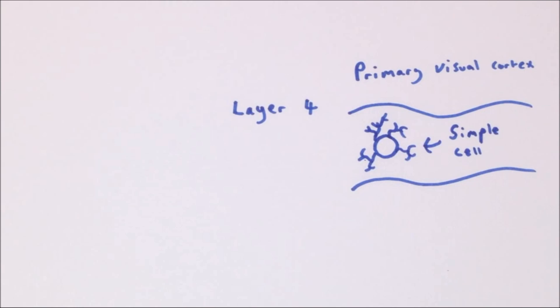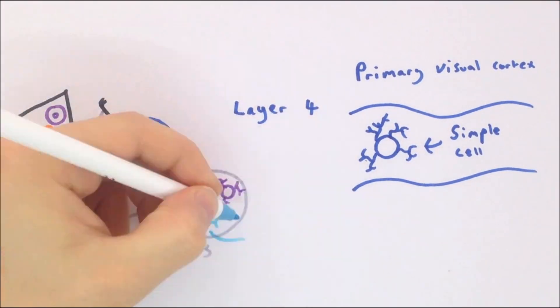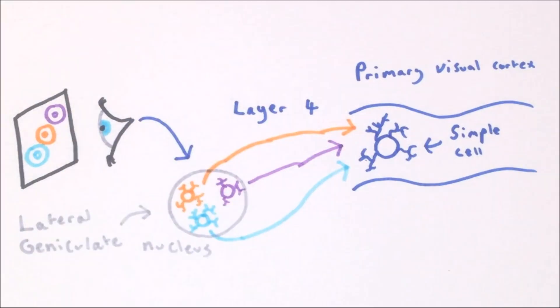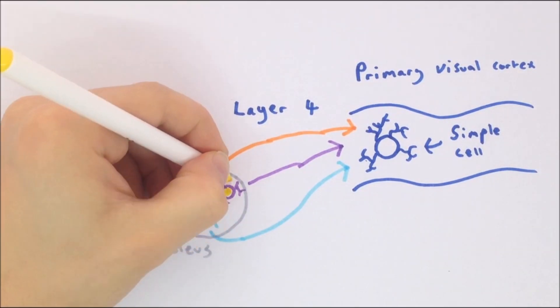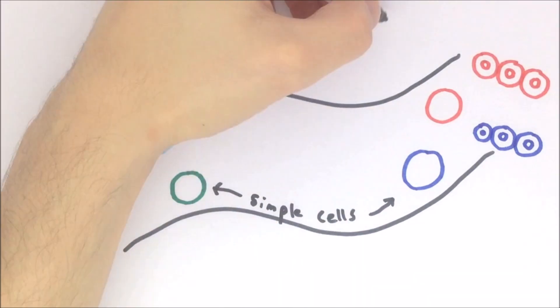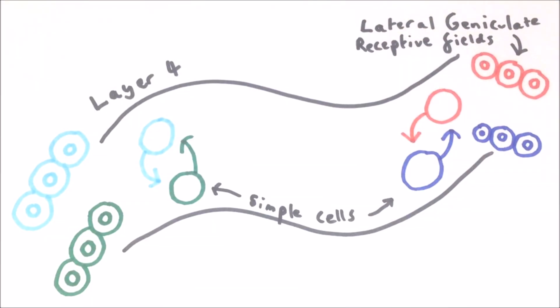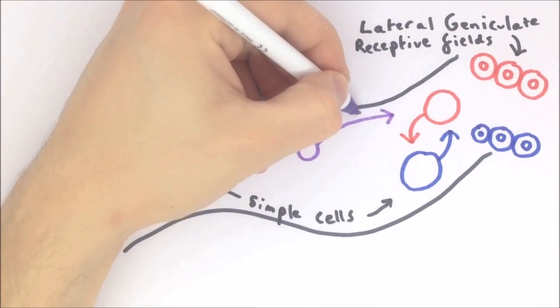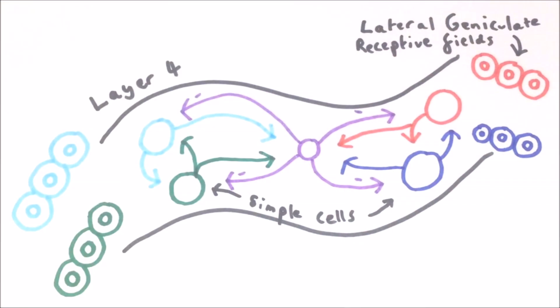In the primary visual cortex, neurons in layer four are known as simple cells. They receive input from a number of lateral geniculate neurons whose receptive fields are arranged in a line, meaning they respond to a line of a particular orientation in a particular region of space. Layer four excitatory neurons preferentially connect to other neurons which respond to lines orientated at the same angle. However, neurons responding to all orientations connect to inhibitory neurons, which in turn inhibit nearby neurons regardless of orientation preference.